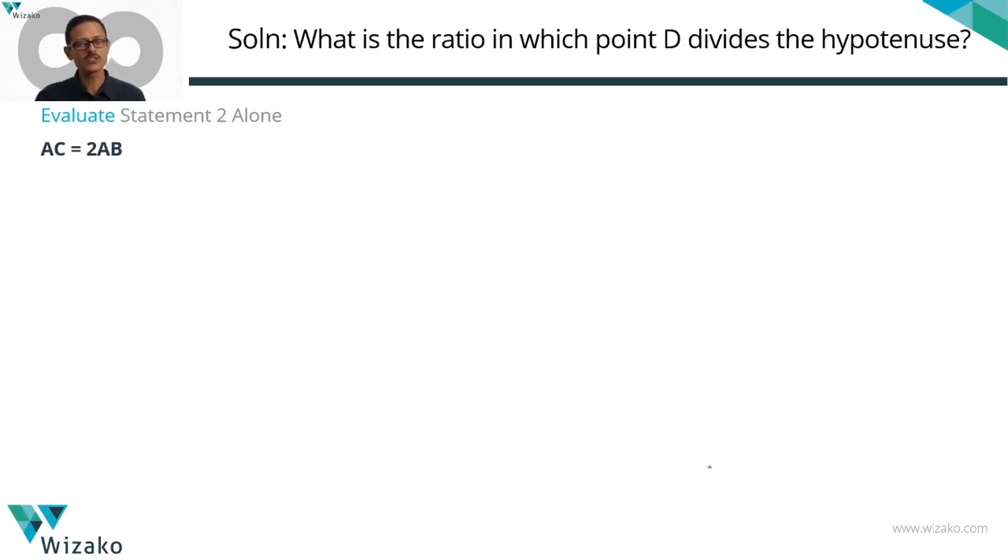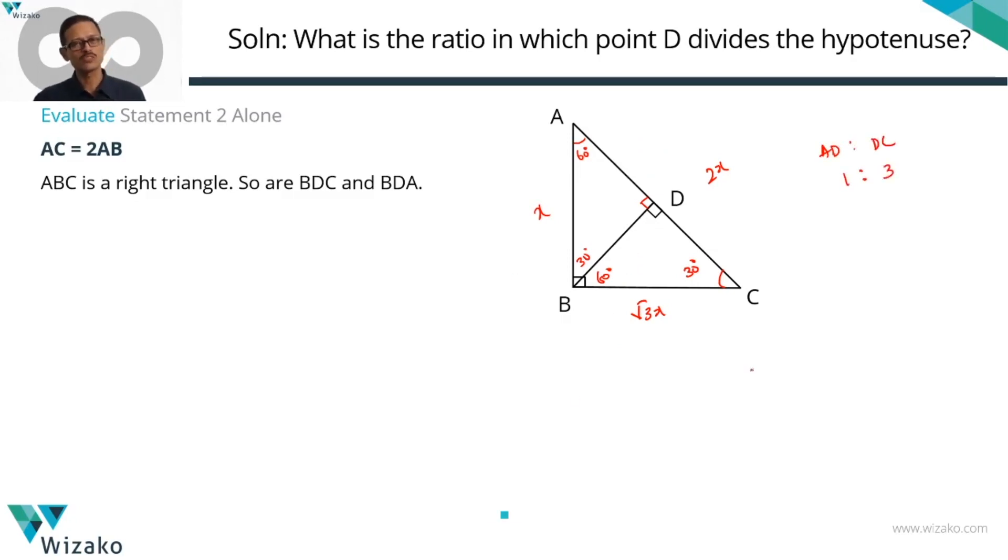Let's look at statement 2. It says AC equals 2AB. AC is the hypotenuse. Let's say AB is equal to X. So AC is going to be equal to 2X. Obviously, as we did earlier, hypotenuse is 2 times, one of the perpendicular sides is 1 time, the third perpendicular side is going to be equal to root 3X. In that case, the angle opposite to AB is going to measure 30 degrees. The angle opposite to BC is going to measure 60 degrees. If this measures 30, this is going to be equal to 60. If this measures 60, this is going to be equal to 30. Do you realize, is this any different from the last right triangle that we drew? Absolutely not.